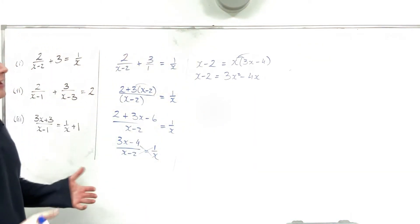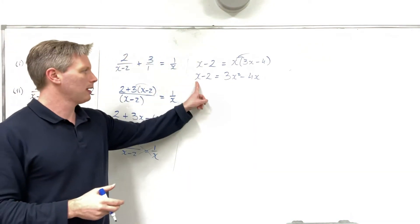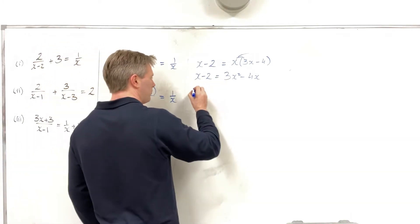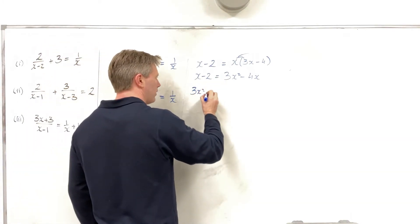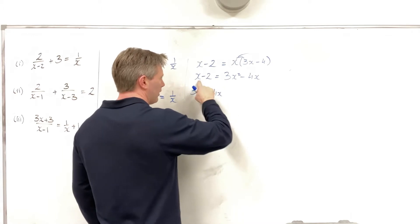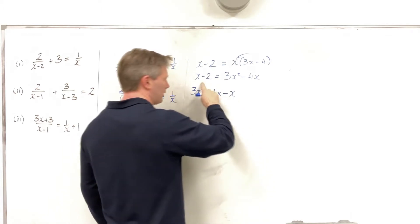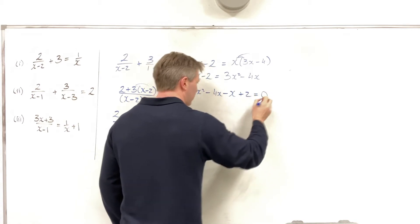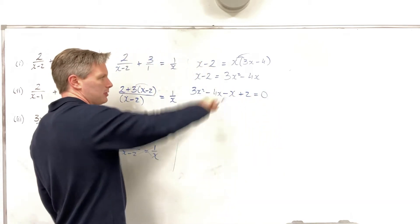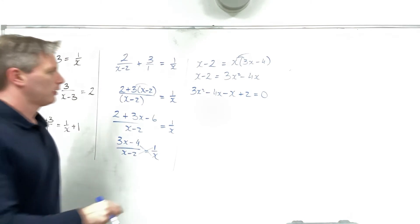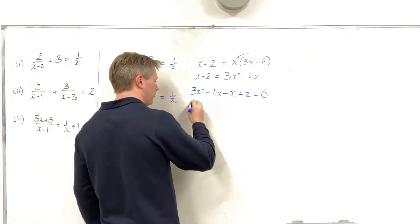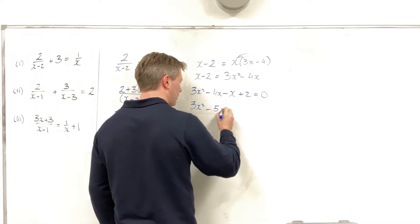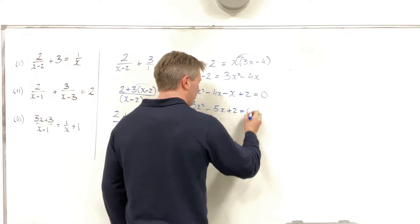I'll now gather all my terms together. Bringing x minus 2 to the other side gives me 3x squared minus 4x minus x plus 2 equal to 0. Combining those like terms, that gives me 3x squared minus 5x plus 2 is equal to 0.